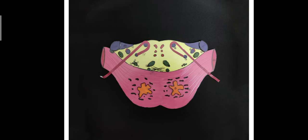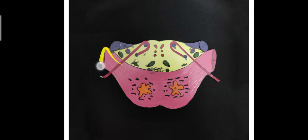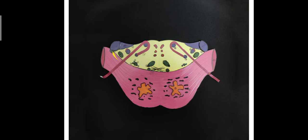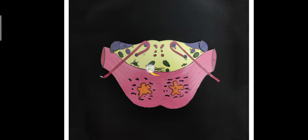Here you can see a diagrammatic representation showing the two parts of the pons. This one over here is the basilar part, and above the yellow area is the tegmental part. Separating them is the trapezoid body.